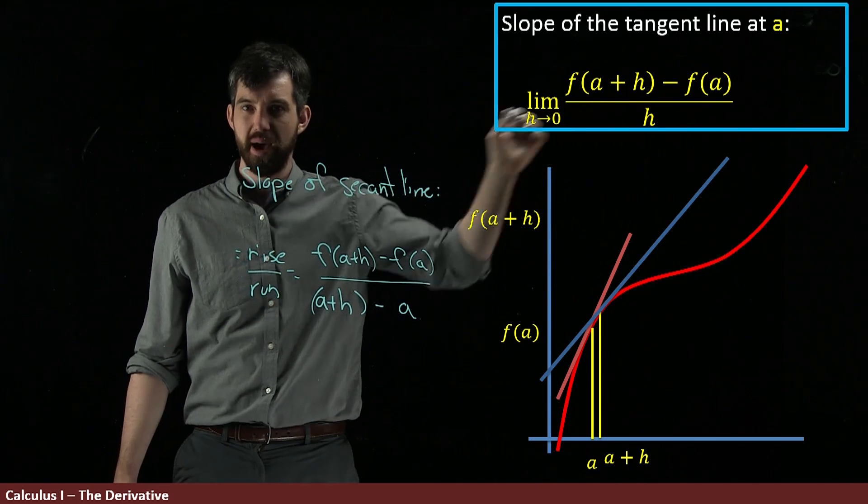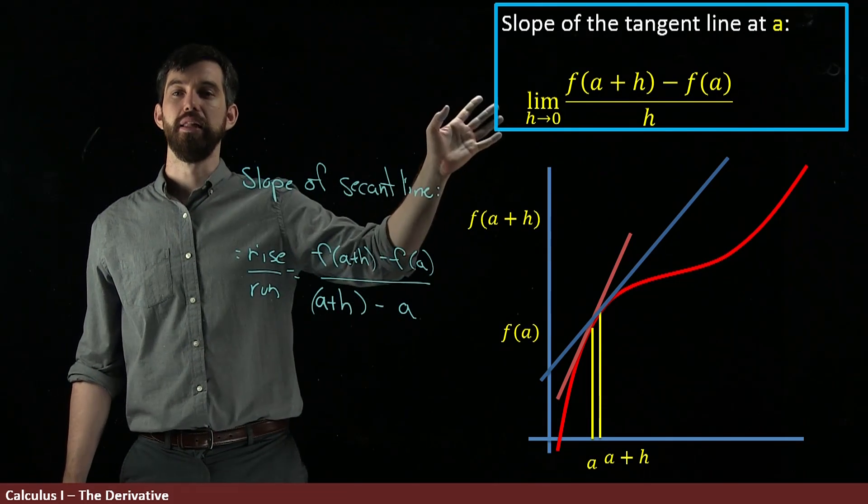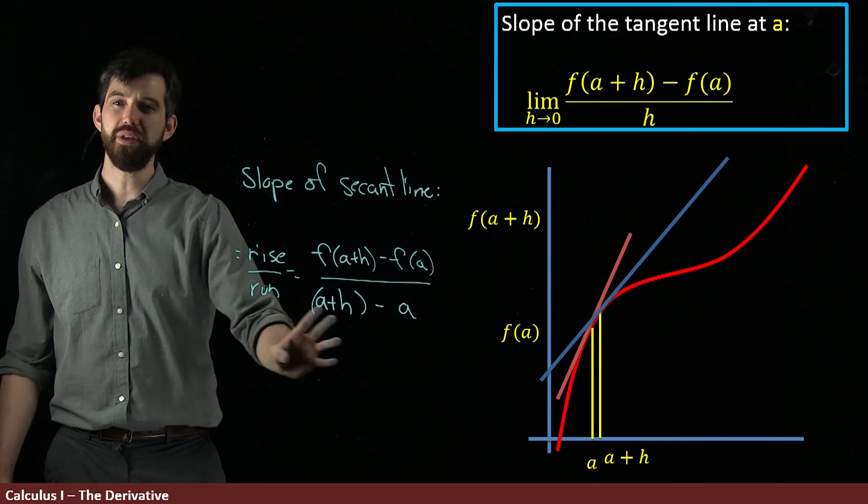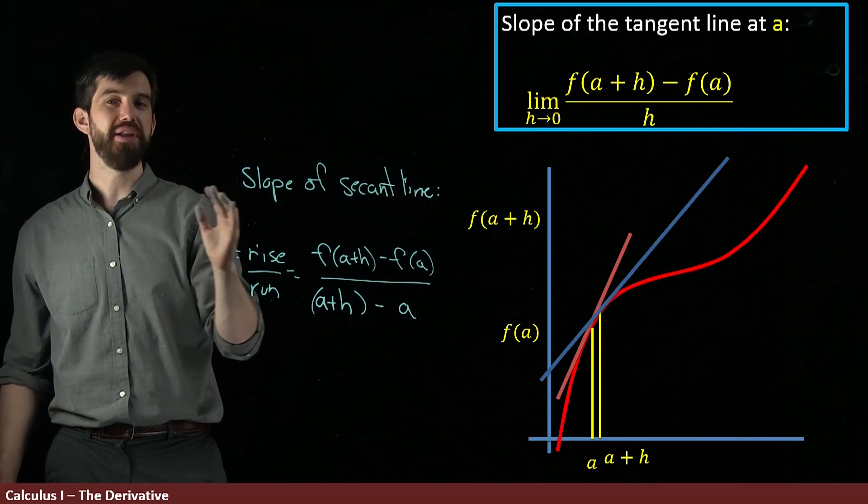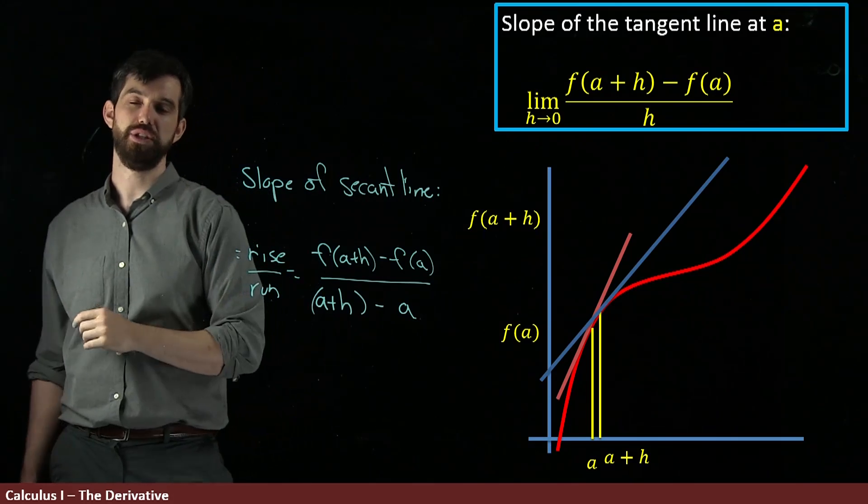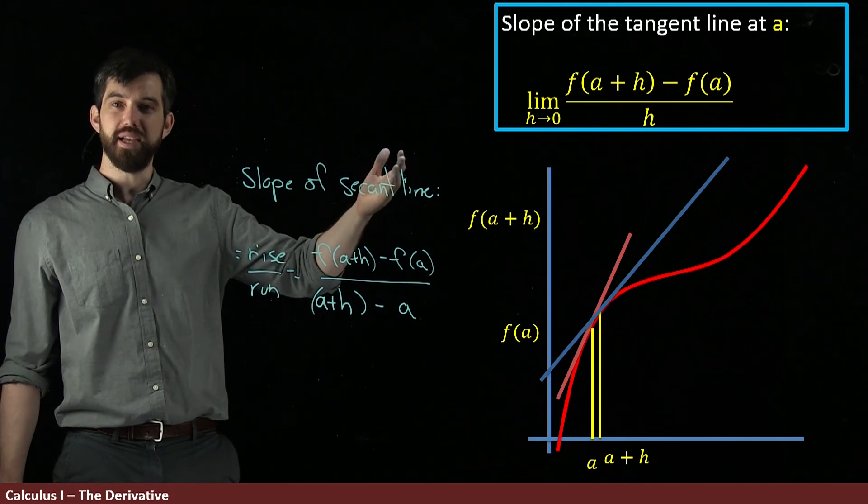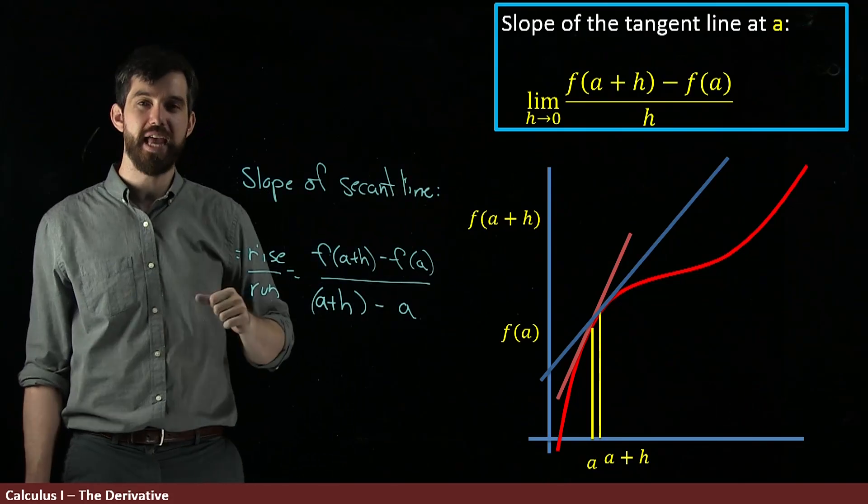Same formula, just clean it up. But the key thing is with the limit. This is the slope of the secant line for two different points. And I'm going to take the limit as h goes to zero. And this to me is a definition of the slope of the tangent line.